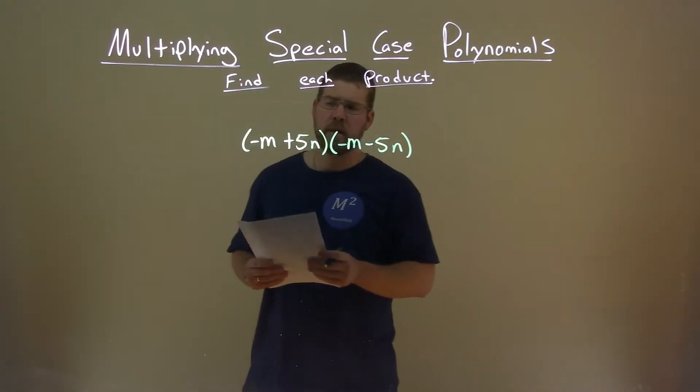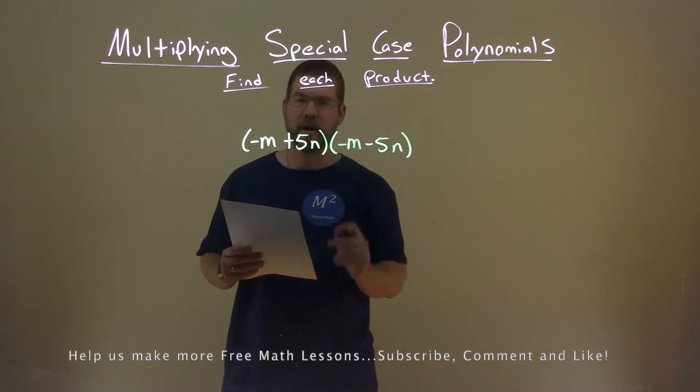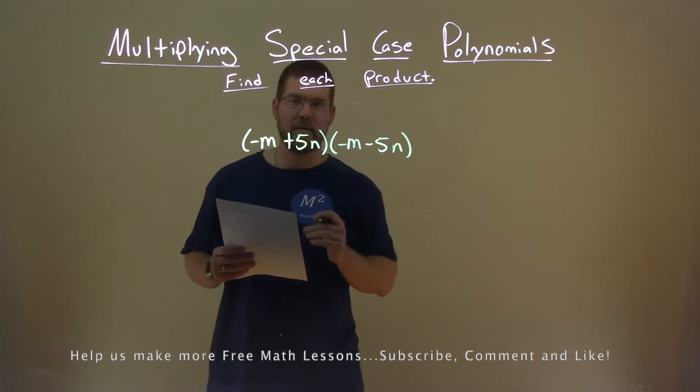We're given this problem right here: negative m plus 5n times negative m minus 5n, and we want to find this product.